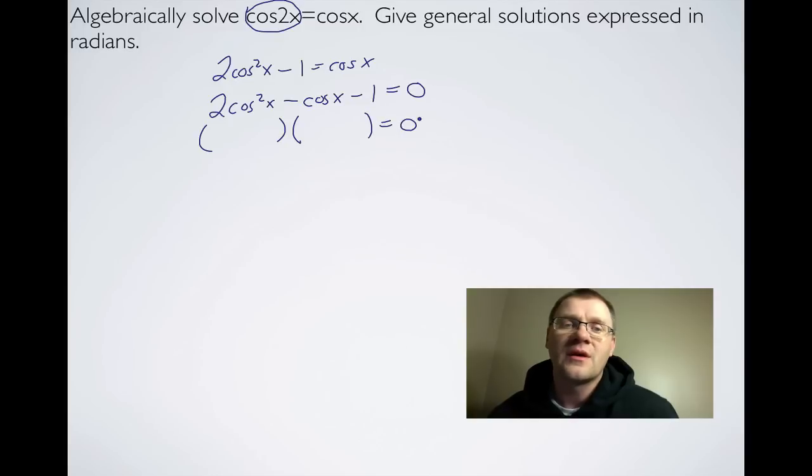Now this would be a chance for you to use maybe decomposition or you can use a guess and check method. I know that if I multiply the two first terms together, then I need to get 2cos²x. So one of these things is 2cosx and the other thing is just regular cosx, and then the second term is going to be 1 in this one and the second term here is going to be -1.